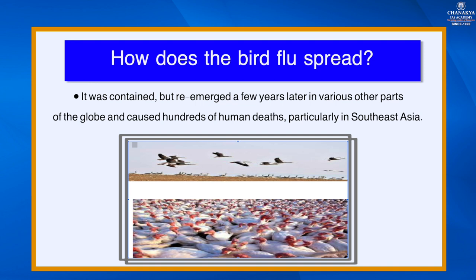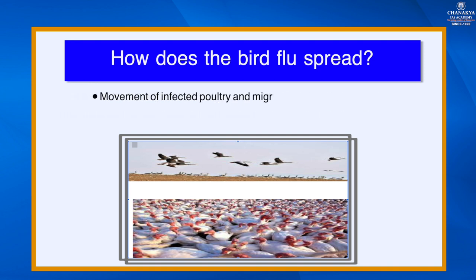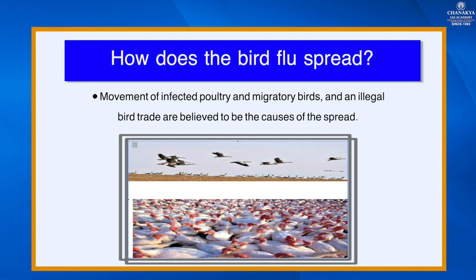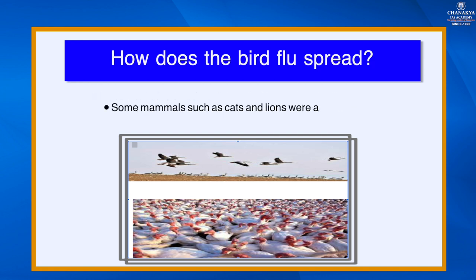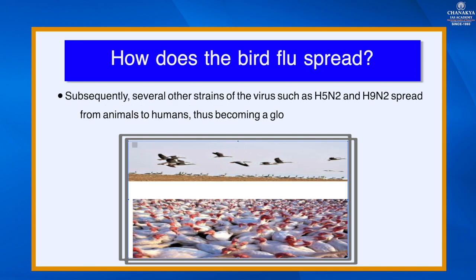The re-emergence caused hundreds of human deaths, particularly in Southeast Asia. The movement of infected poultry, migratory birds, and illegal bird trade are believed to be the causes of the spread. Some mammals such as cats and lions were also infected. Several other strains such as H5N2 and H9N2 subsequently spread from animals to humans, becoming a global public health concern.